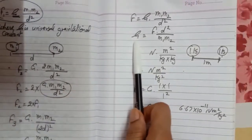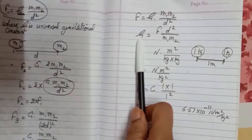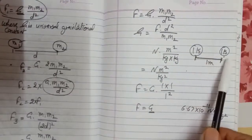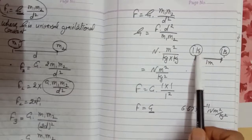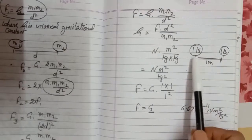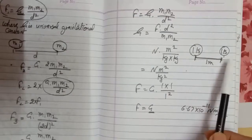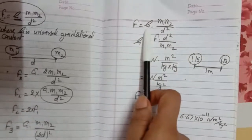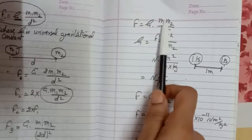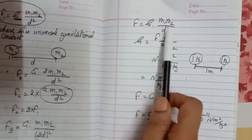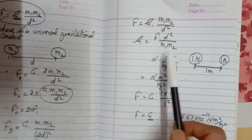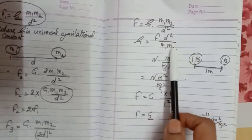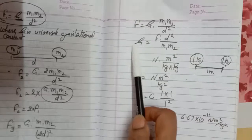What is the universal gravitational constant? We know that if the mass of two bodies is 1 kg each and we keep them at a distance of 1 meter from each other, then the force acting between them should be equal to G. Because according to the formula, G equals F times D squared upon M1 times M2. By keeping D equal to 1 and M1 equal to 1 and M2 equal to 1, we get G equal to F.